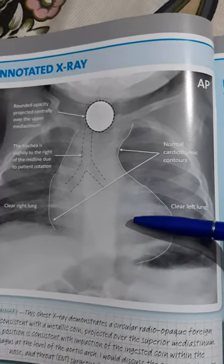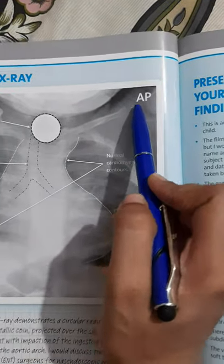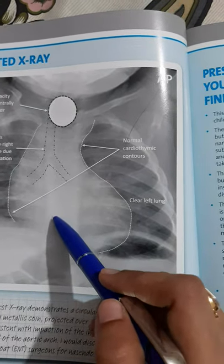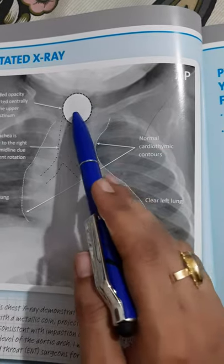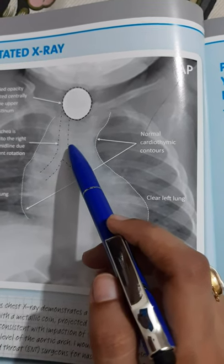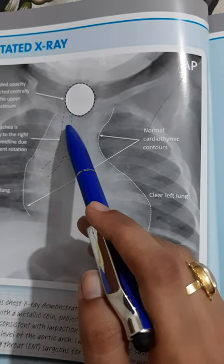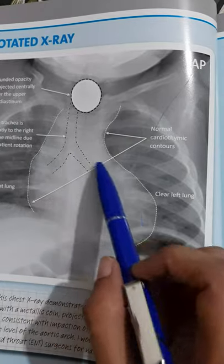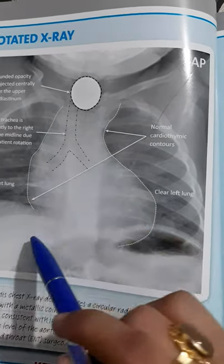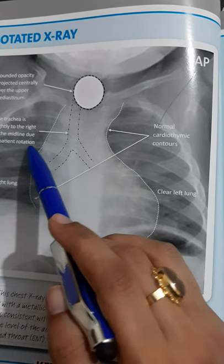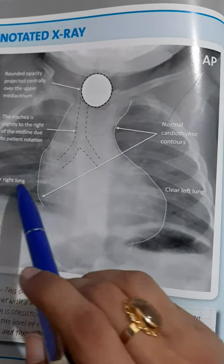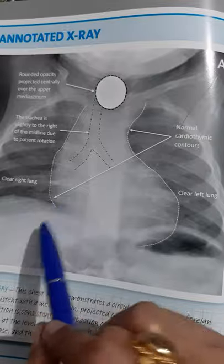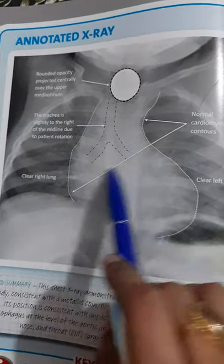This is an AP chest x-ray of a child. The patient is slightly rotated, but the x-ray is adequately inspired and penetrated, displaying the abnormality, and it is diagnostic. The most striking abnormality is a well-defined circular radio-opaque entity projected over the superior aspect of the mediastinum. The trachea is projected slightly to the right of midline due to patient rotation. The cardiomediastinal contours are unremarkable and there is normal thymic shadow. There is no evidence of foreign body or lung hyperexpansion or collapse. No pneumothorax or pleural effusion is visible. There are normal costophrenic angles bilaterally. There is no free subdiaphragmatic gas, and the visualized skeleton and soft tissues are unremarkable.